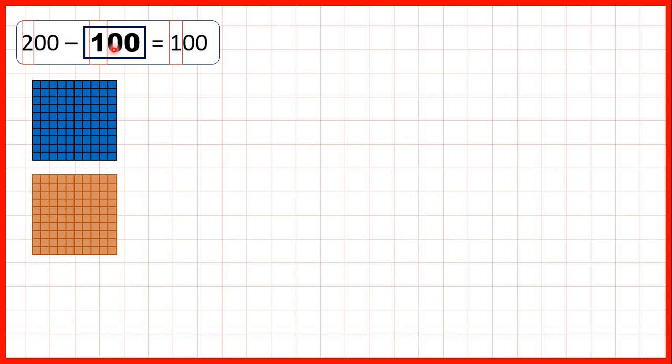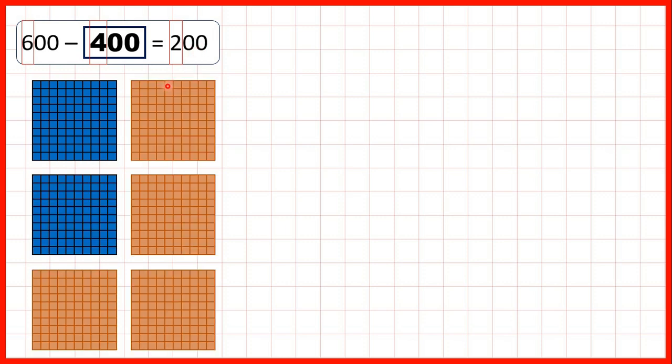200 minus 100 is 100, so if we start with 200 blocks and take 1 away, we're left with 100. And 600 minus 400 is 200, so if we start with 600 blocks and take 4 away, we're left with the two hundreds blocks that we can see here in blue.